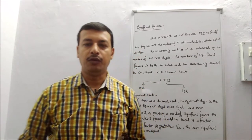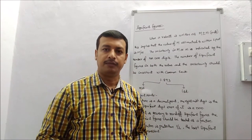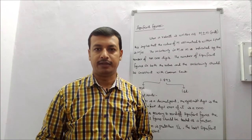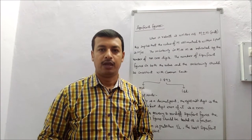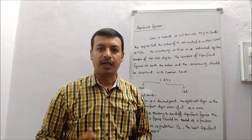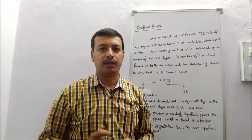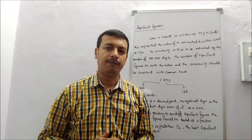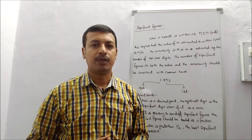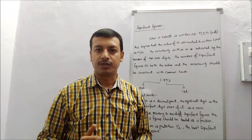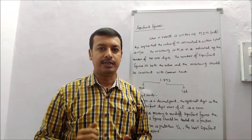In the last video, we learned about the basics of measurements and types of measurements. We saw that there are three parts of a measurement: first part is the value, then the unit, and the third part is uncertainty.